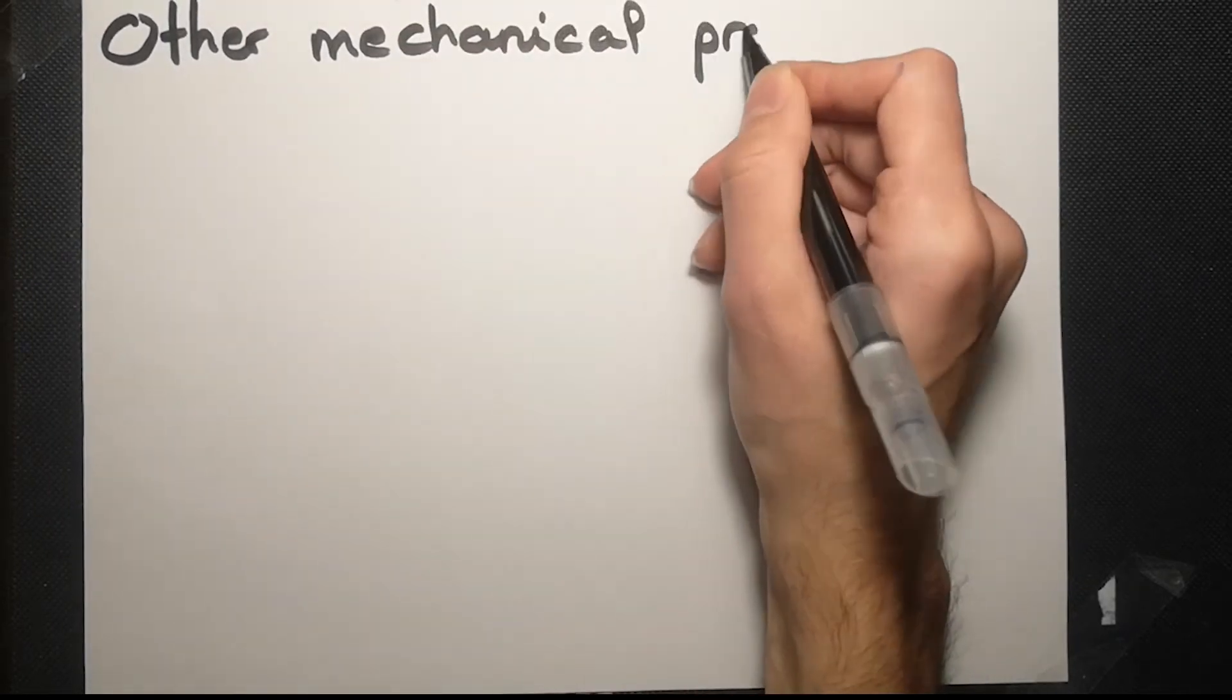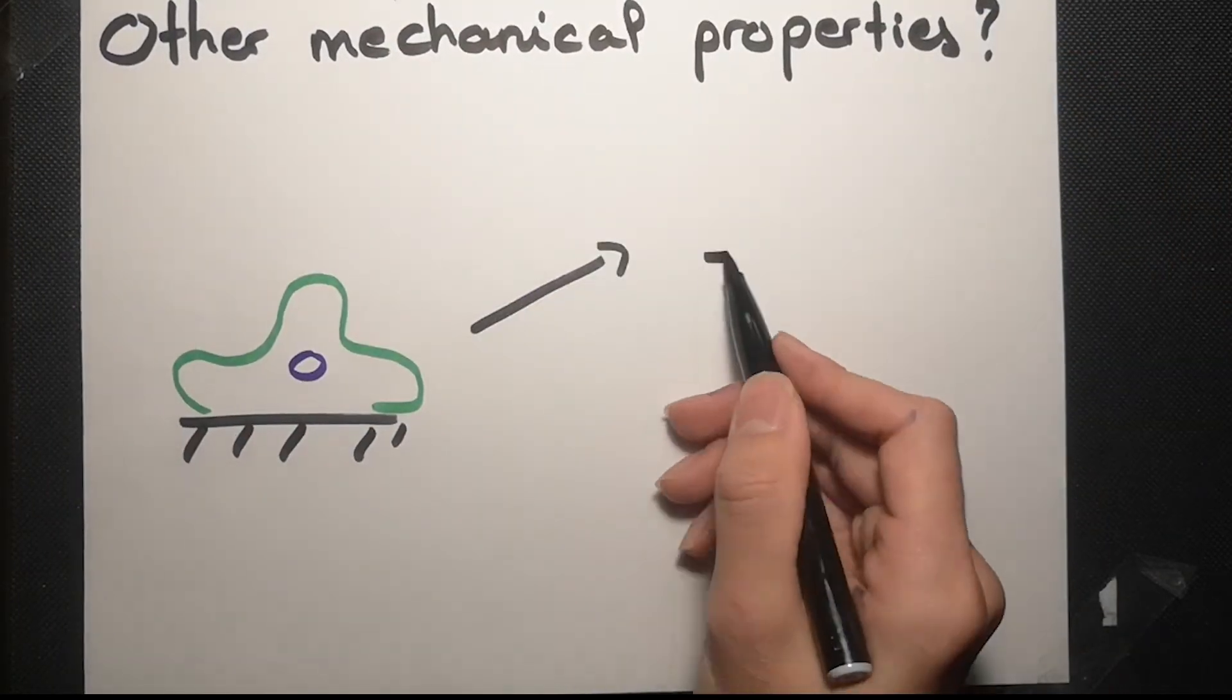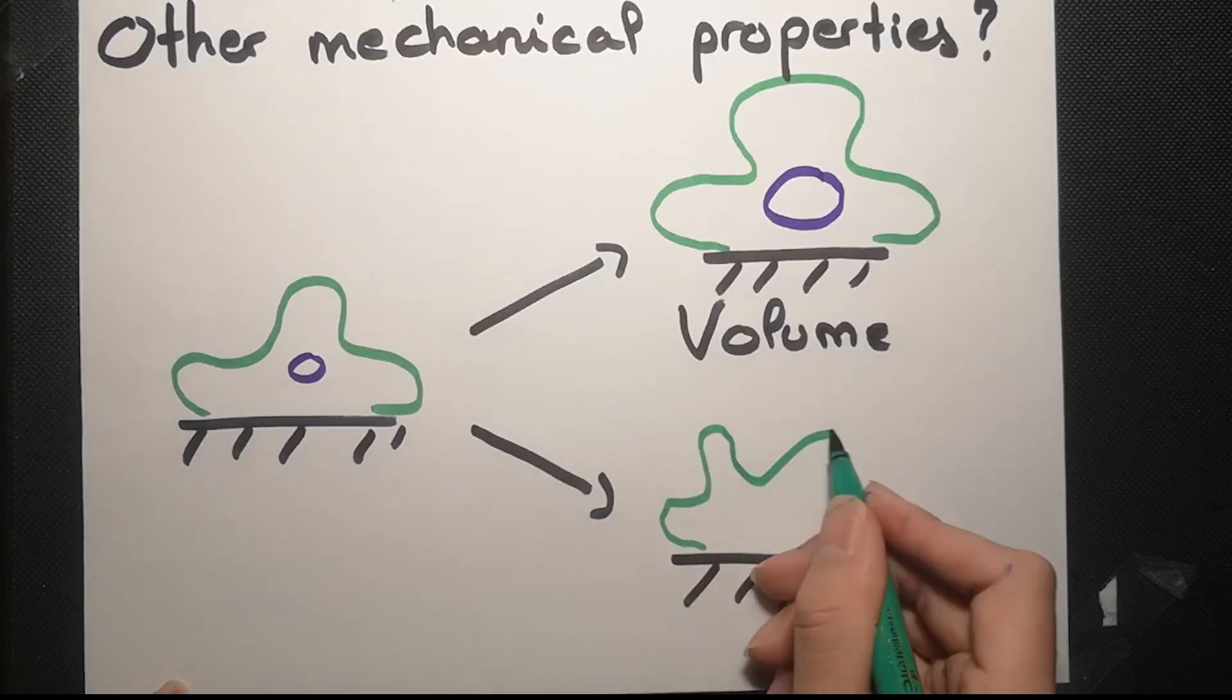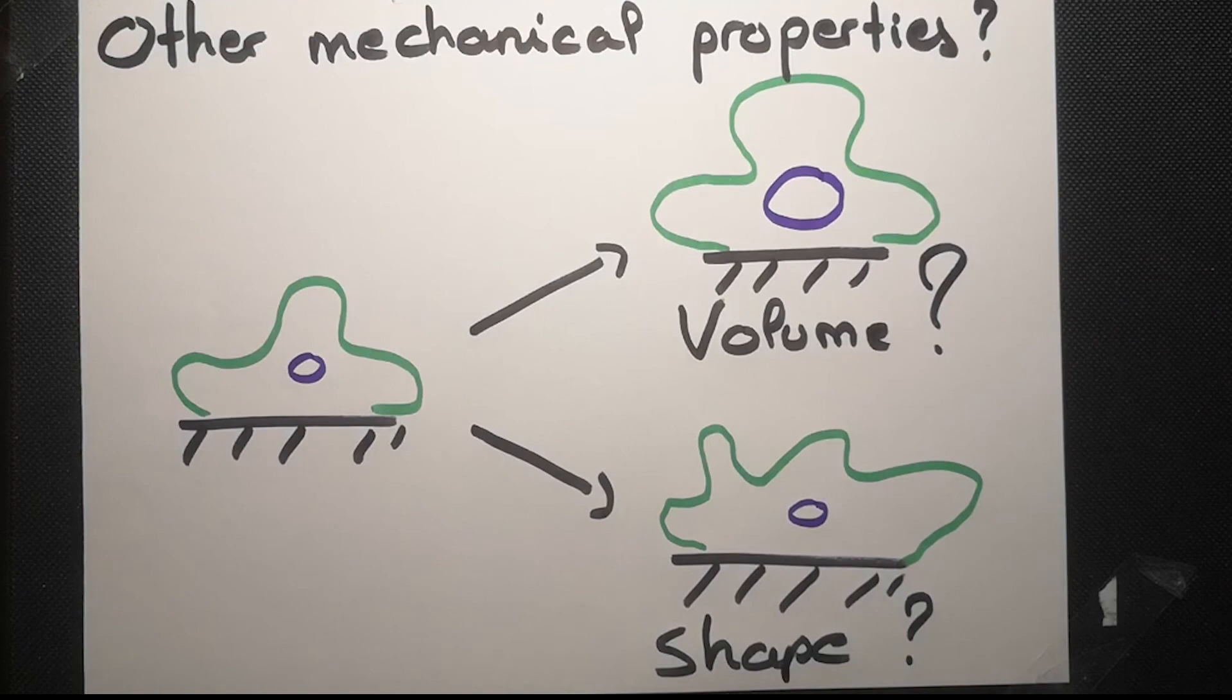Now the question is, what are the other parameters we can use to predict tumor behavior, such as volume, shape, or contractility of cells?